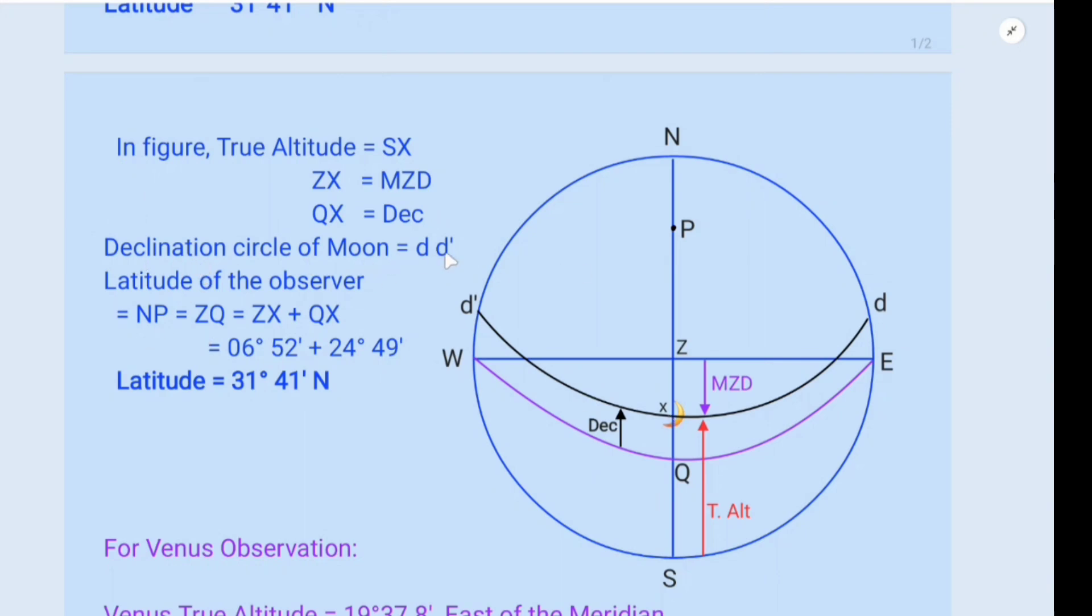Declination circle of moon, that is d, this one is declination circle of moon. So latitude of observer is NP, N to P, this is latitude of the observer. Is also equal to ZQ. ZQ, that is latitude of the observer. NP is equal to ZQ, this ZQ.